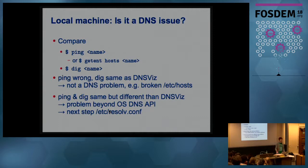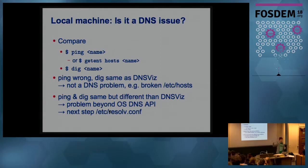But if the results from ping and dig are the same, it means that DNS is returning something weird. DNS says the IP address should be 91.whatever, and ping says 1.2.3.4, and dig as well. So locally we are getting different values from DNS than values seen in the DNS Swiss.